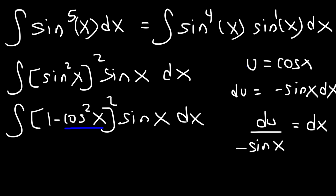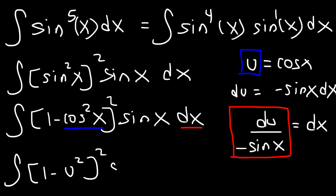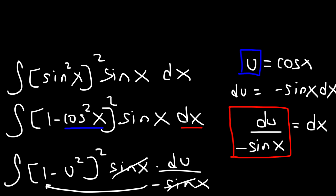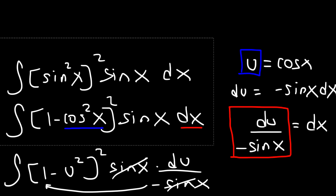Now let's replace cosine with the u variable. And let's replace dx with du divided by -sin(x). So we have the integral of (1 - u^2)^2 times sin(x) times du divided by -sin(x). And so we could cancel sine, and I'm going to move the negative to the front.